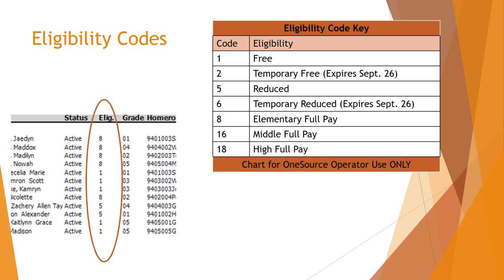For example, high balances on a full pay student should be high priority for you to address, while high balances on a student who is free is an outstanding balance that is no longer accumulating and would be lower priority.